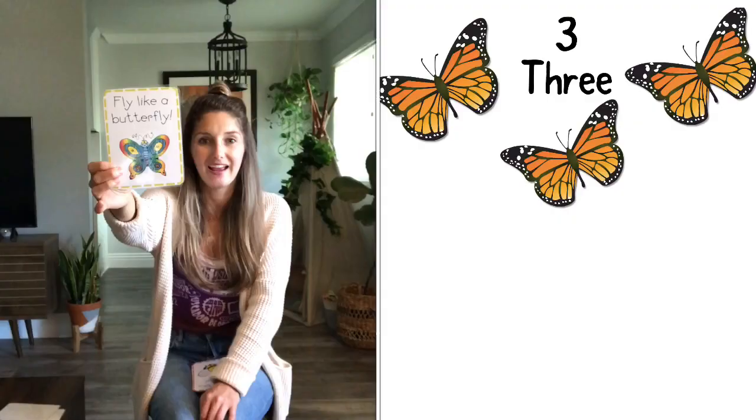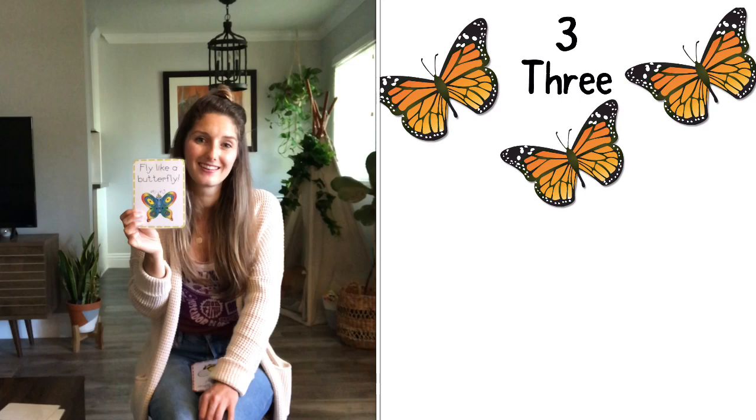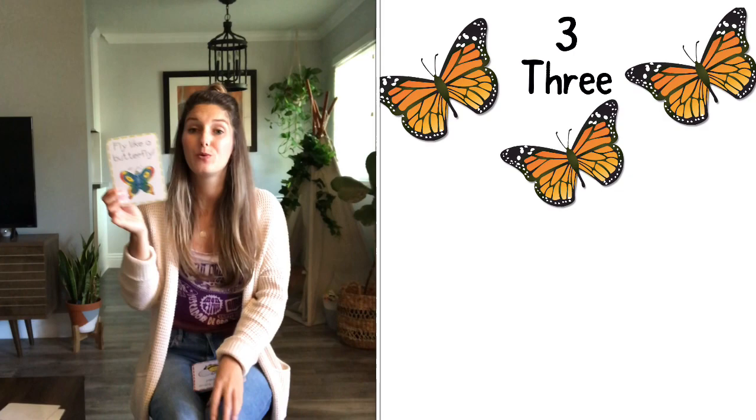We know what this one is, right? What is this called? Good, a butterfly. How many butterflies do you see? That's right, you said three. There are three butterflies. We are going to fly like a butterfly. That means we're going to flap our wings three times. One, two, three. Good friends.